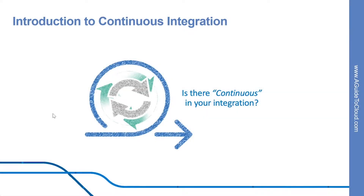So what is Continuous Integration? Continuous Integration or CI is the process of automating the build and testing of code every time a team member commits changes to version control. Continuous Integration encourages developers to share their code and unit tests by merging their changes into a shared version control repository after every small task completion. Committing code triggers an automated build system to grab the latest code from the shared repository and to build, test, and validate the full master branch, also known as the trunk or main.